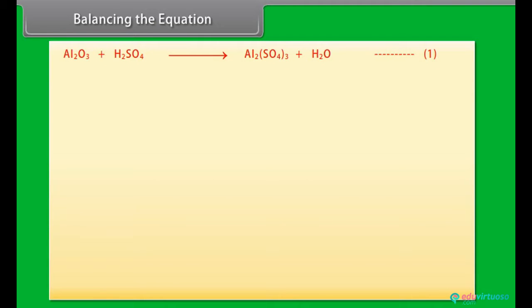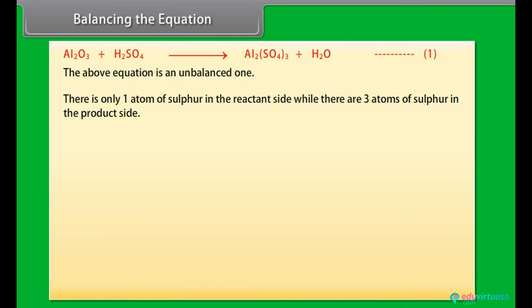Balancing the equation: Al2O3 plus H2SO4 gives Al2(SO4)3 plus H2O. Equation 1. The above equation is an unbalanced one. There is only one atom of sulfur in the reactant side while there are three atoms of sulfur in the product side.